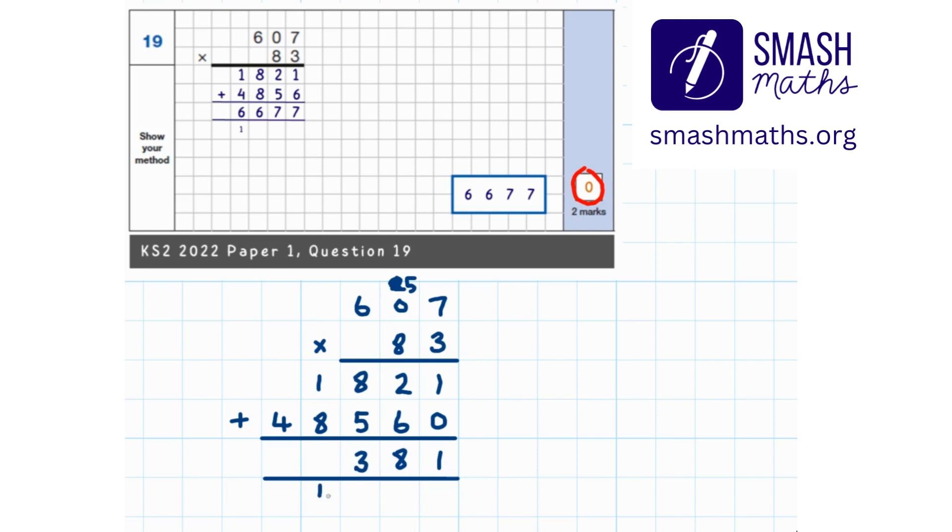1000 add 8000 is 9000. Add on the exchange 1000 is 10,000, which is 0 and 1 ten of thousands. 4 tens of thousands and 1 ten of thousands is 5 tens of thousands.